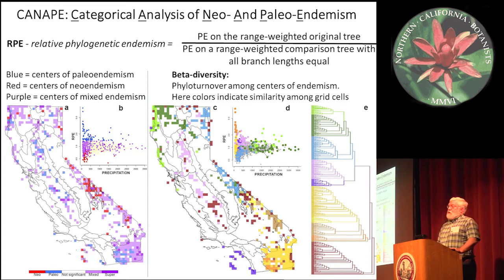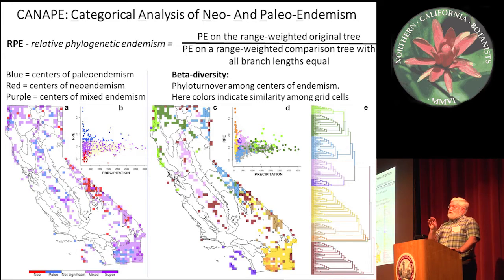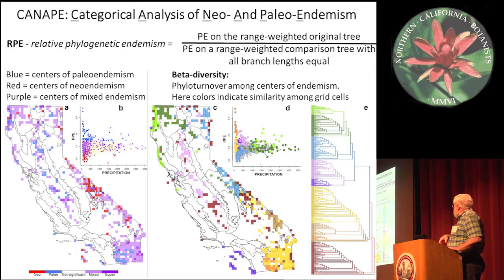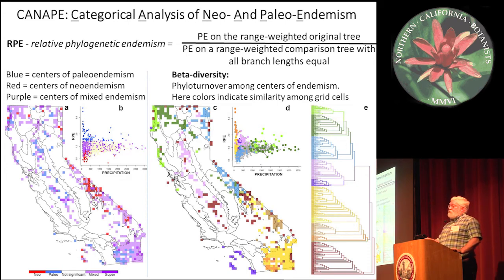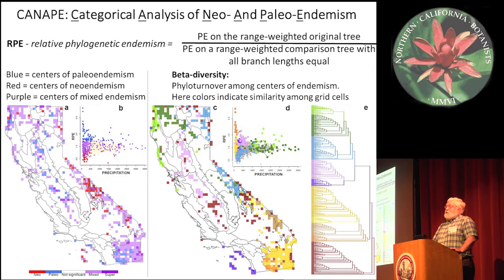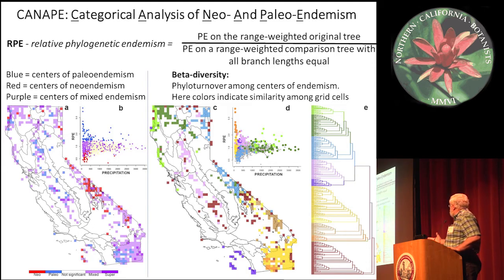If we take into account range size, that's phylogenetic endemism. We do an analysis called CANAPE, where we can parse out areas with significant concentrations of phylogenetic endemism into places where that is due mainly to rare, short branches — a center of neoendemism — or rare, long branches — a center of paleoendemism — or some mixture of the two. Many of the hyperdiverse areas are mixtures. Blue is centers dominated by paleoendemism, red is centers dominated by neoendemism, and purple has a big dash of both. It correlates most closely, environmentally, with just precipitation — the dry areas of the state are fantastic, going back to something Stebbins used to write about: aridity as a stimulus for plant evolution.